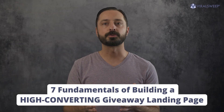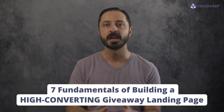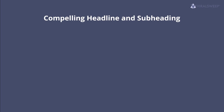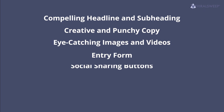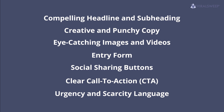In this video, I'm going to walk you through the seven fundamentals of building a high converting giveaway landing page, as well as show you how we incorporated all these elements into the ViralSweep giveaway app. The seven elements include: a compelling headline and subheading, creative and punchy copy, eye-catching images and videos, an entry form, social sharing buttons, a clear call to action or CTA, and urgency and scarcity language.